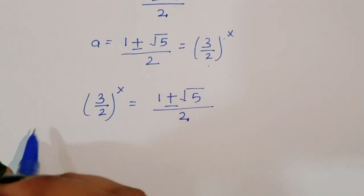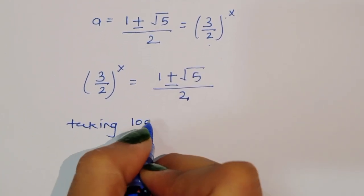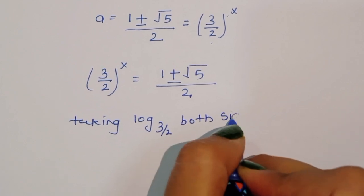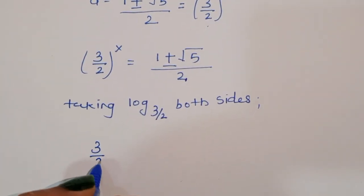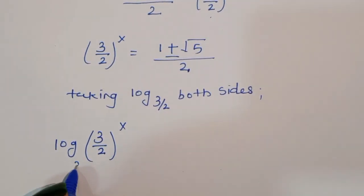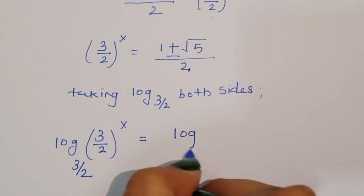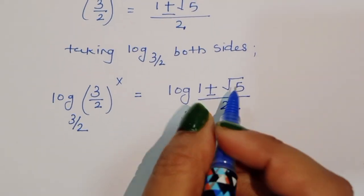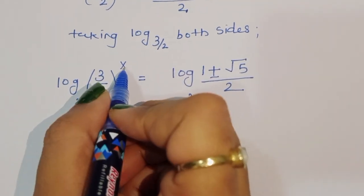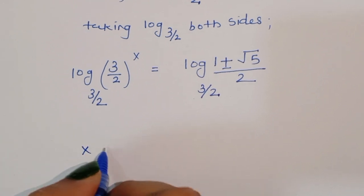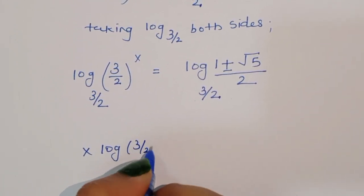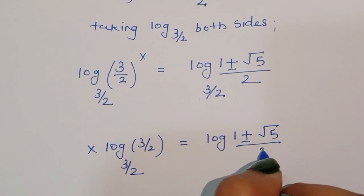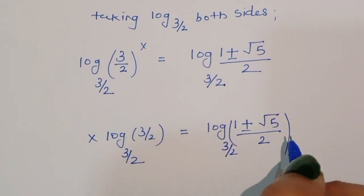Now taking log to the base 3/2 on both sides, we get log base (3/2) of (3/2)^x is equal to log base (3/2) of (1 + √5)/2. Using the formula log_a(a^x) = x.